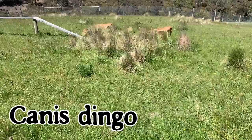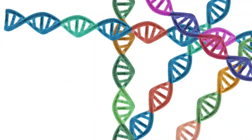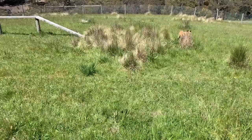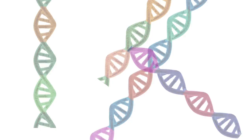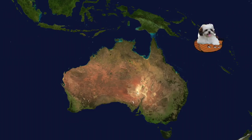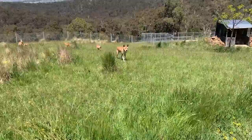Whether you agree that dingoes are a separate species or a subspecies, from analysing their DNA it's clear that they have their own particular genetic pool. Or at least, they did. For the last few hundred years, many dingoes have been interbreeding with domestic dogs and feral dogs.